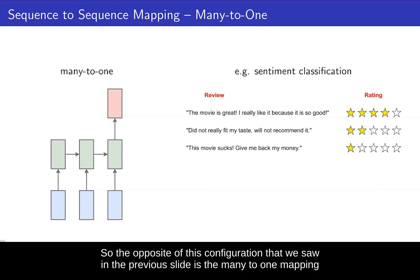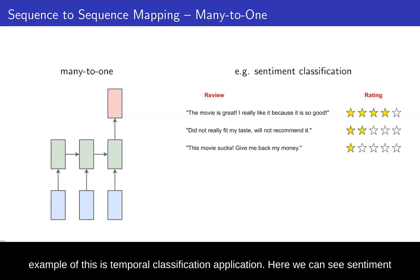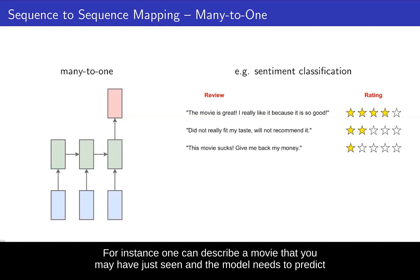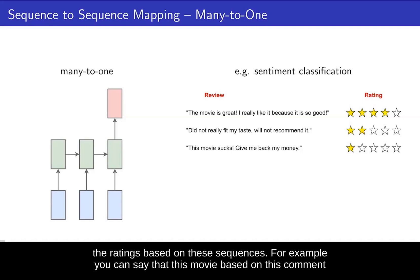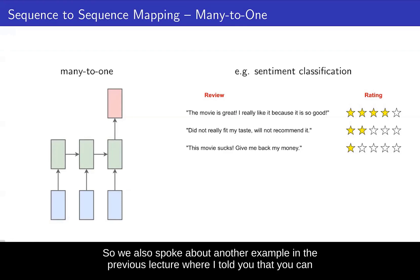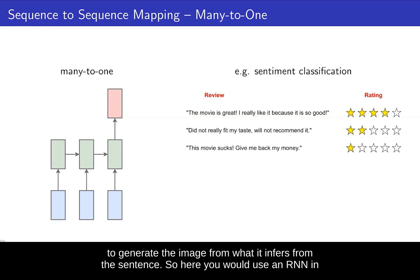The opposite of this configuration is the many-to-one mapping, where you have inputs of variable lengths and the model gives you one output. An example is temporal classification — for instance, sentiment classification, where you have a sentence as input. One can describe a movie they have just seen, and the model needs to predict the ratings based on these sequences, such as four stars versus two stars. We also spoke about the opposite of image captioning, where you input a sentence and want the network to generate an image from what it infers.